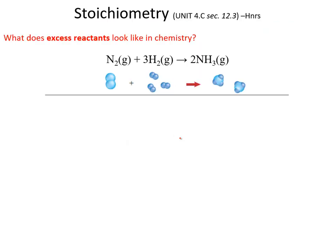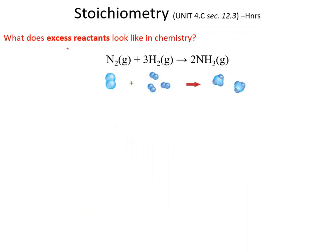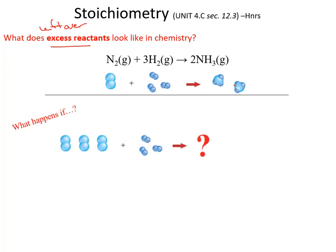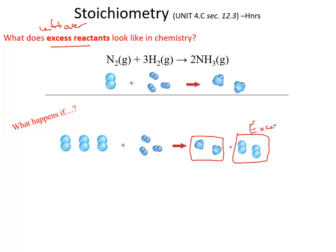If we have a limiting reactant, then there must be something we call an excess reactant — something that is left over. Looking at the Haber process again: one molecule of nitrogen gas plus three molecules of hydrogen gas creates two molecules of ammonia. With three molecules of nitrogen gas and three molecules of hydrogen gas, we create two molecules of ammonia, but we also have two leftover molecules of nitrogen gas. So for three nitrogen and three hydrogen, we get two ammonia and two excess nitrogen — those are the leftovers.